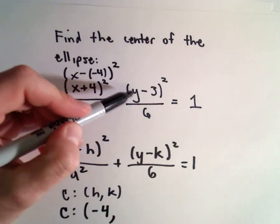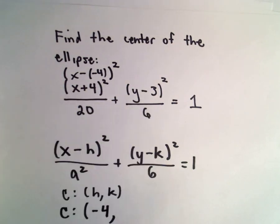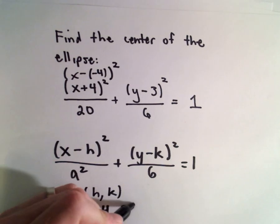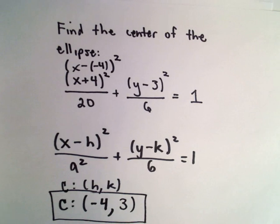And we already have y minus k. In this case, we have y minus 3. So again, we have it in that standard form. Our k value is going to be positive 3. So that's it. Our center is going to be at (-4, 3).